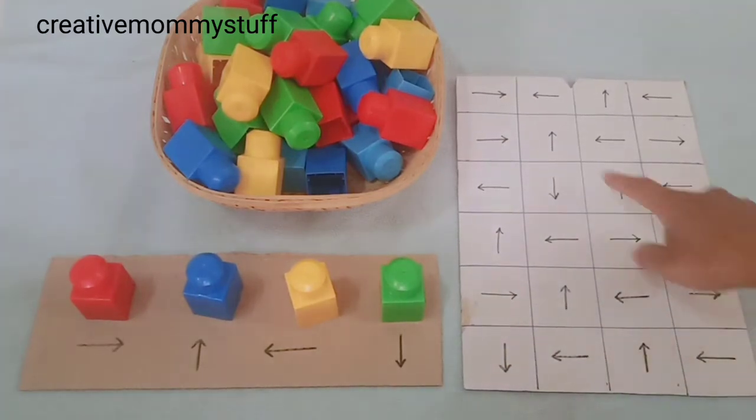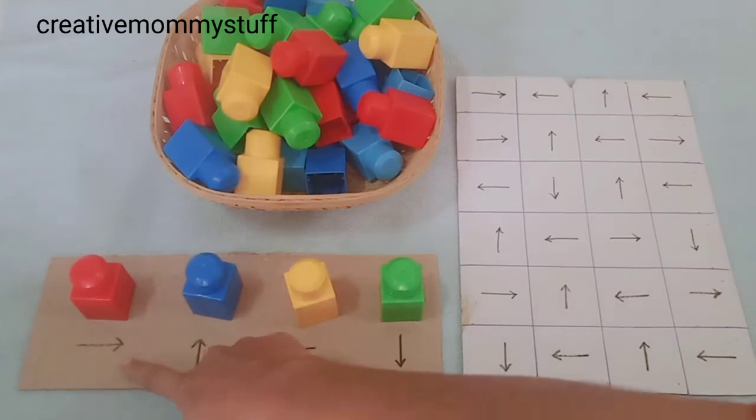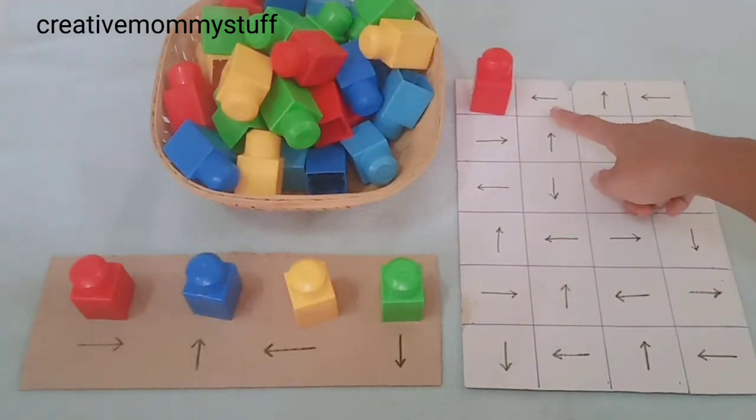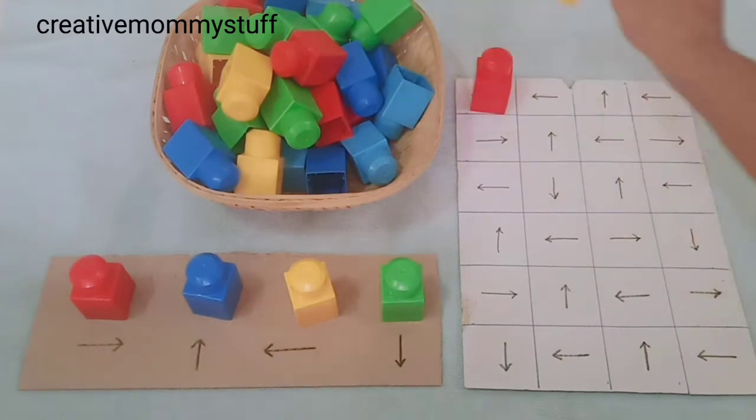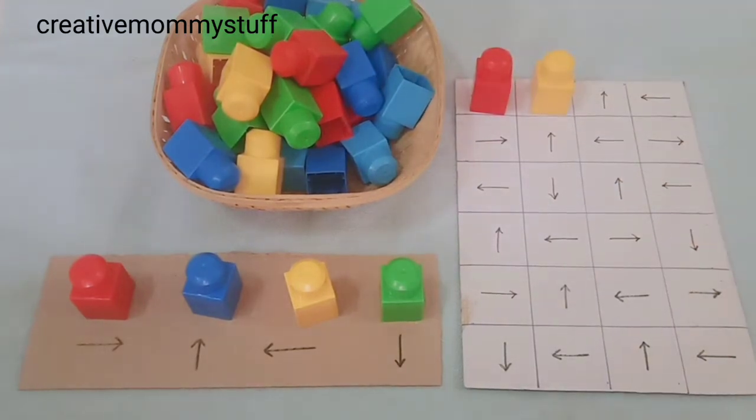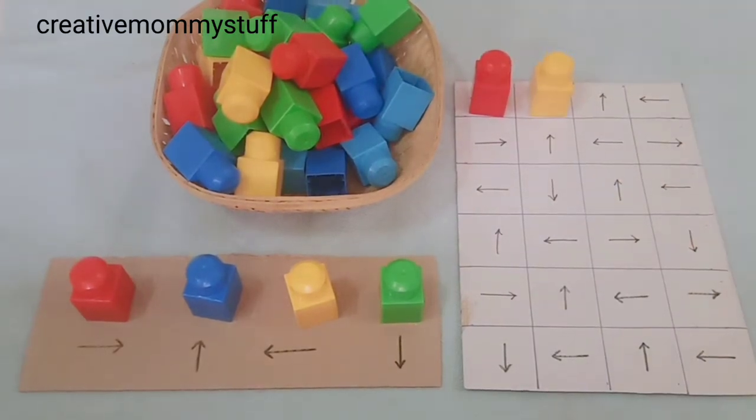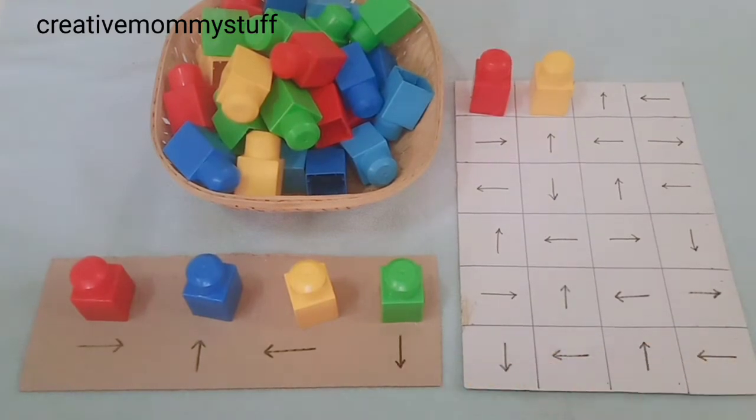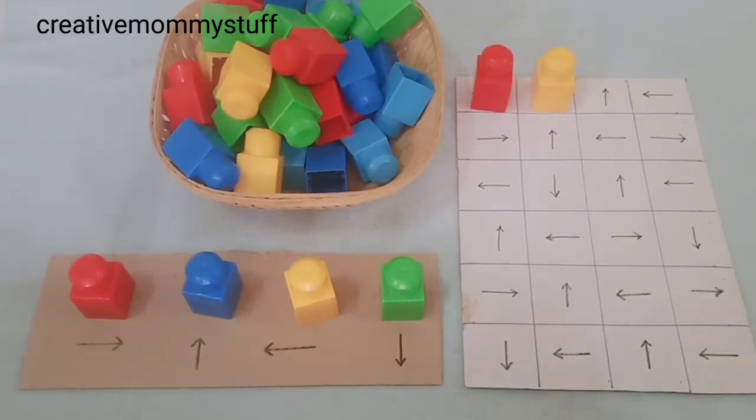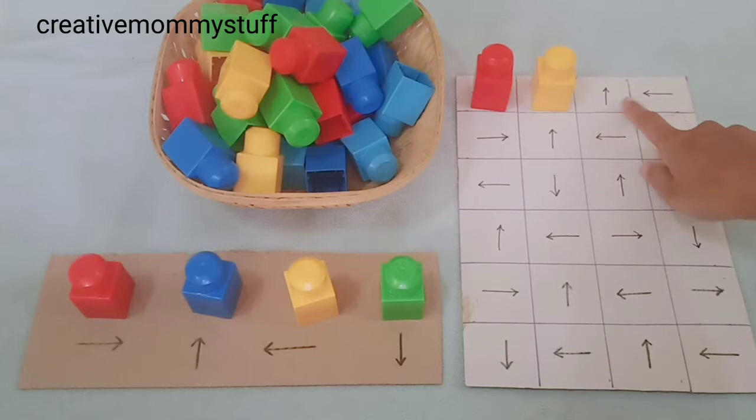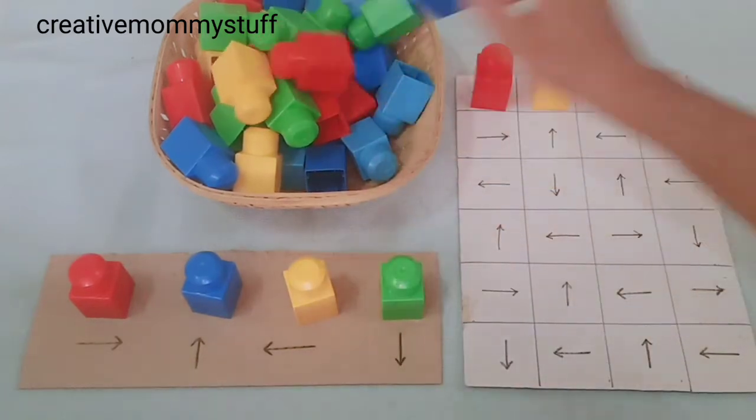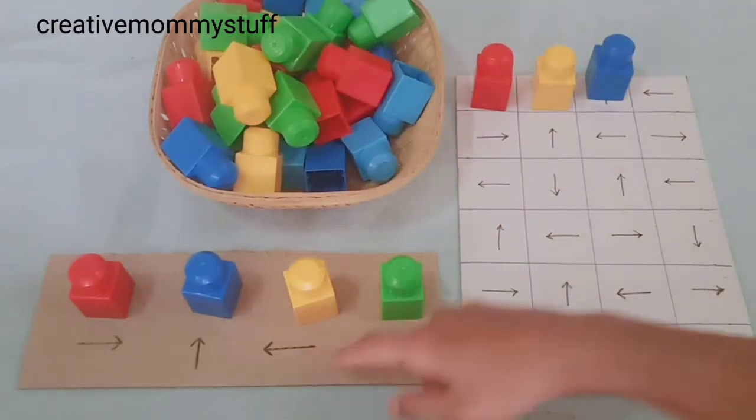For example, right we have red color, so red. Left we have yellow, so the kid will place the yellow blocks like this. You can every time change this color pattern and the kid will do it accordingly. Up means blue, left means yellow.